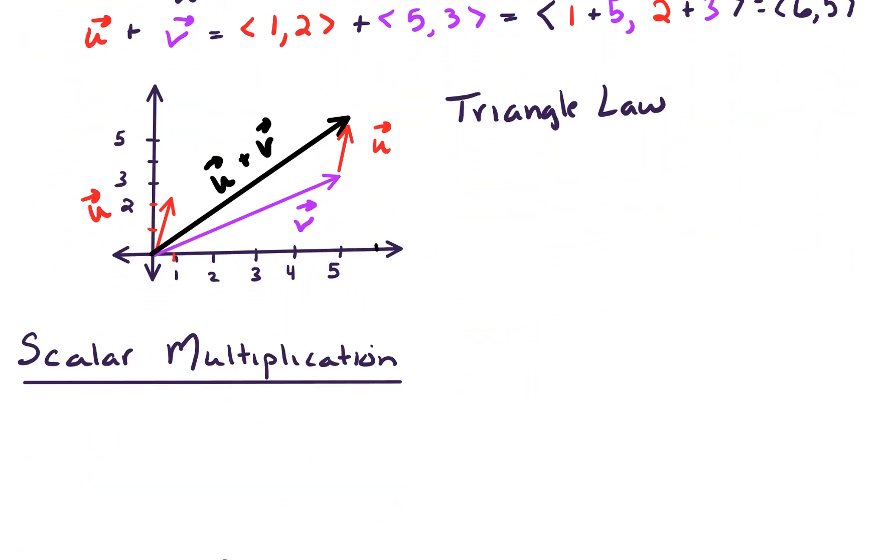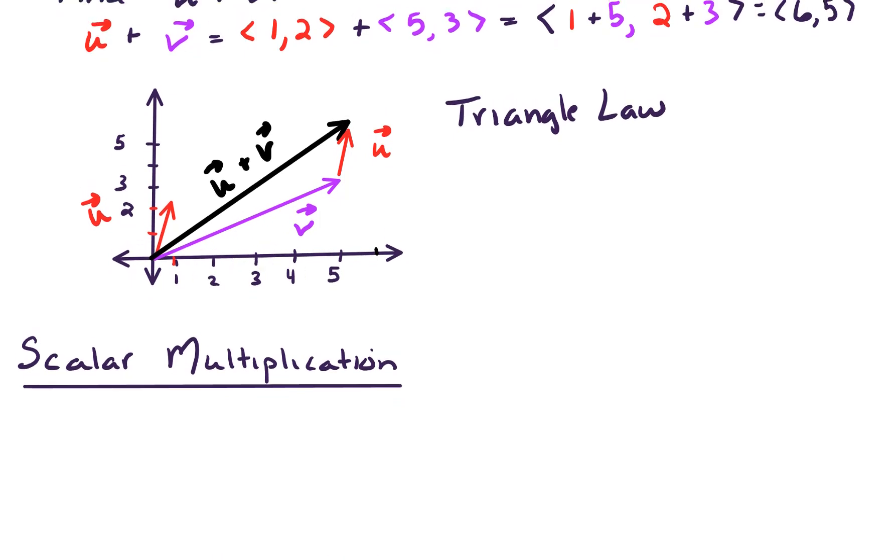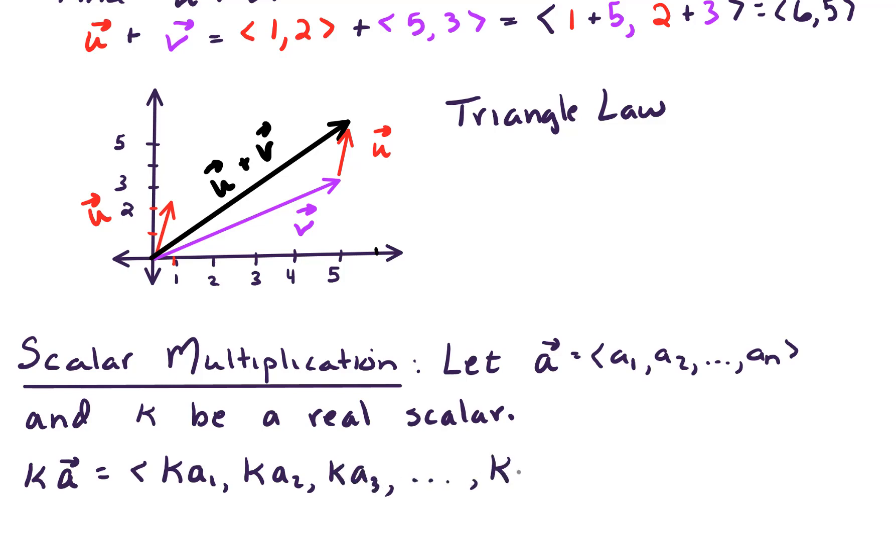Last thing we want to talk about here is scalar multiplication. Let vector a be a vector with n components. So we'll say a1, a2, all the way up through a sub n. Let k be a real scalar, just a real number. Now we're looking at scalar multiplication. k times a just looks like k multiplied component-wise. Scalar multiplication also happens component-wise, and we see that k multiplies all the way through our vector.